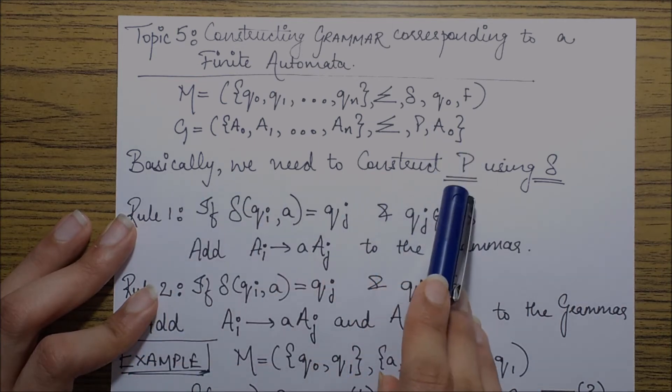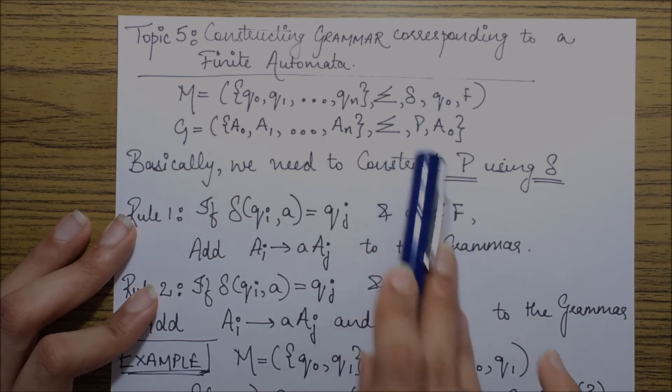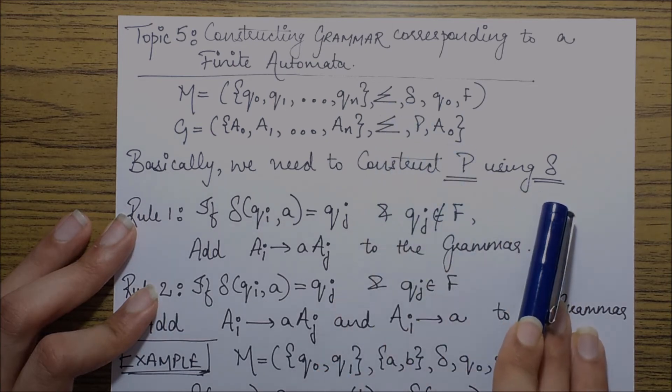So we basically need to construct set of productions P using the transition function delta.